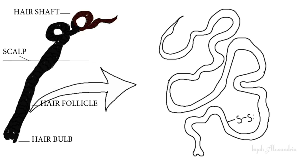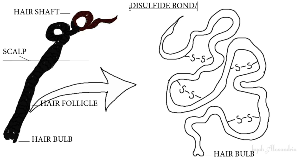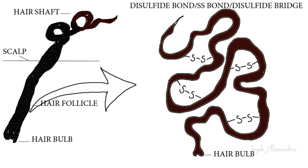The amount of curl is determined by how many protein groups are attached to one another — the more groups of protein, the more the hair curls. A person with kinky hair has more disulfide bonds present than a person with wavy hair, and wavy hair has more bonds than straight hair.